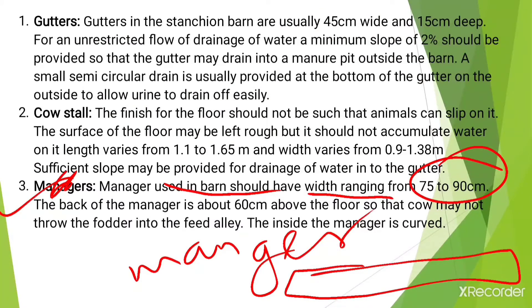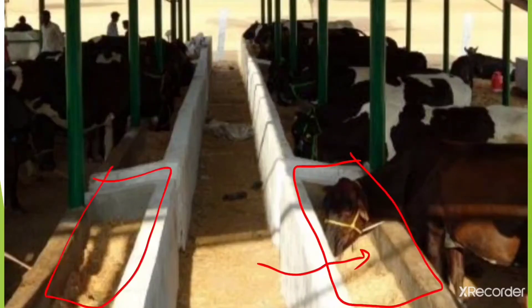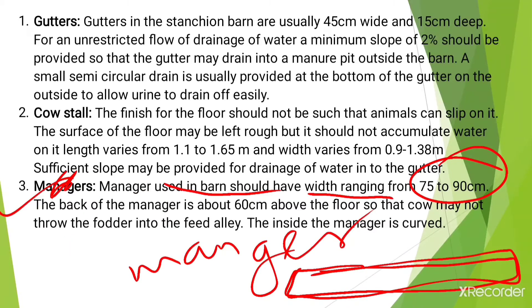The next component is the manger — M-A-N-G-E-R. A manger is a long trough from which animals like horses, cows, and buffaloes can be fed. The manger used in a barn should have a width ranging from 75 to 90 centimeters. The back of the manger is about 60 centimeters above the floor so that the cow may not throw fodder into the feed alley. The inside of the manger is curved.